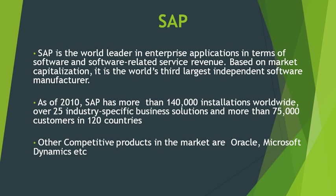The SAP system comprises a number of fully integrated modules which cover virtually every aspect of business management. As of 2010, SAP has more than 1,400,000 installations across over 25 industry-specific businesses. Some rivals of SAP include Oracle, Microsoft, JD Edwards, PeopleSoft, and others.